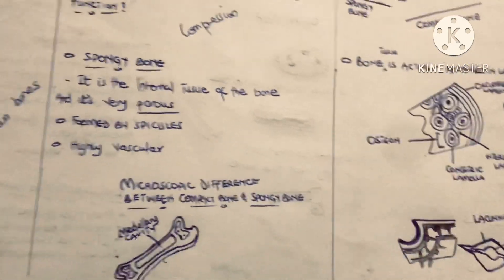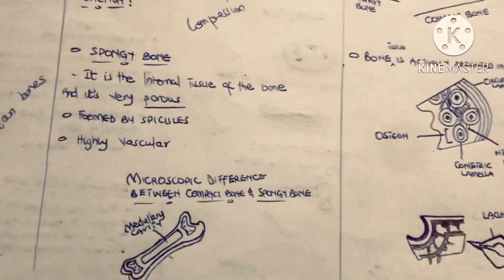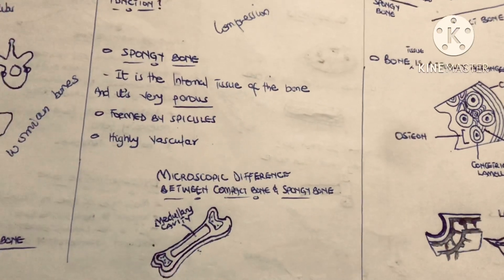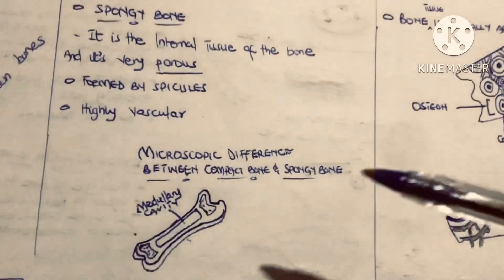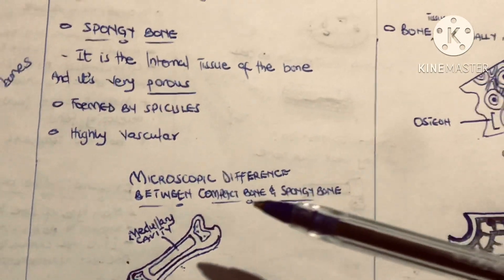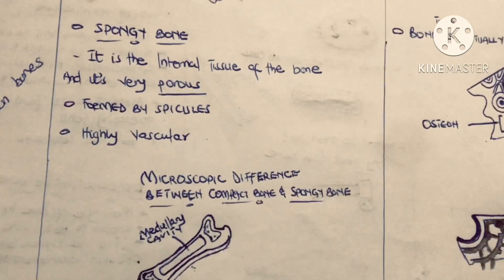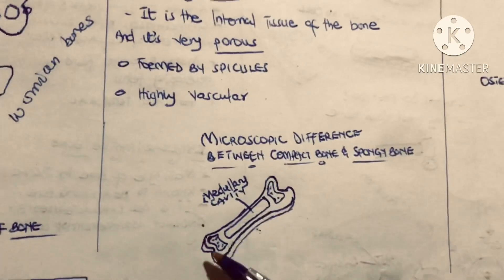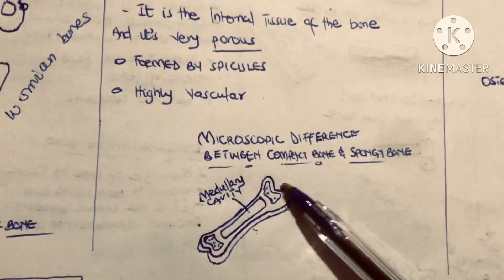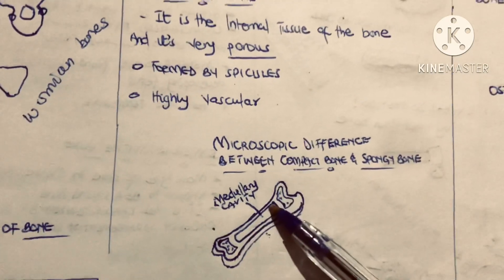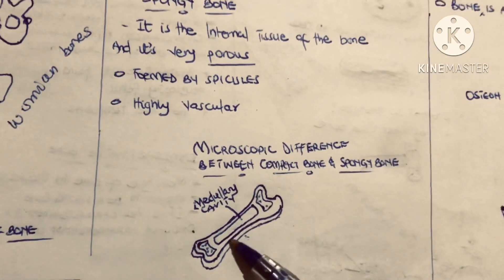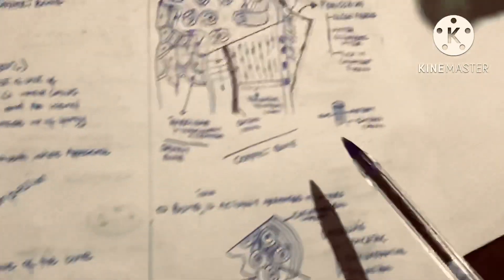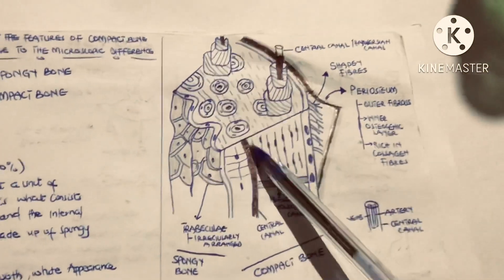In our previous video we talked about bone sauce and short bones. Now we are going to look at the microscopic difference between compact bone and spongy bone. Let's take this long bone here — it has been cut longitudinally, so this is the medullary cavity. Let's take a section of this long bone and look at it.